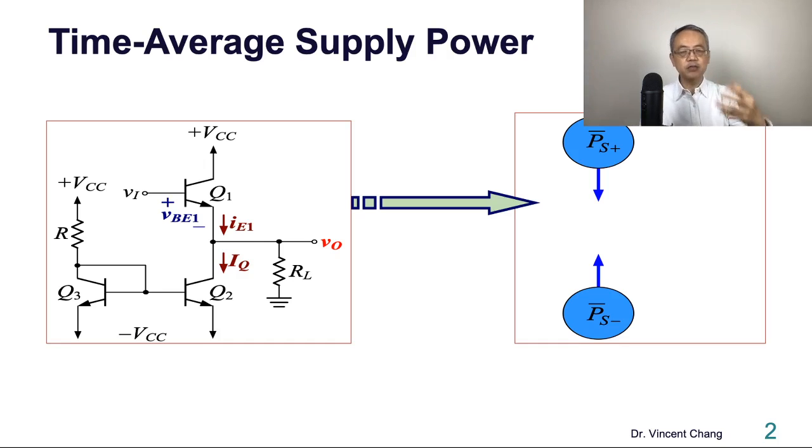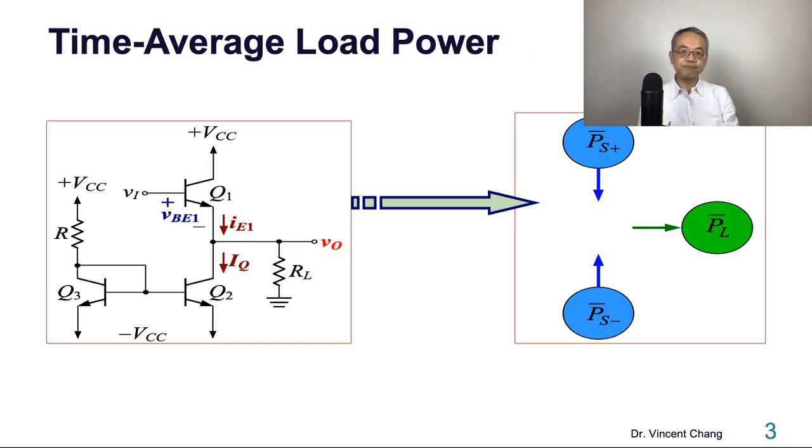So positive power means what? Positive power means consume. And negative power means gain. So consume the supply power from two directions, supply power from two directions and deliver to where? To load. So deliver to load power. So the green power is the load time-average load power.